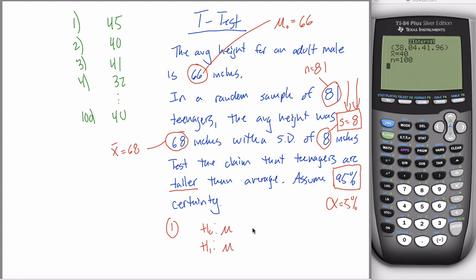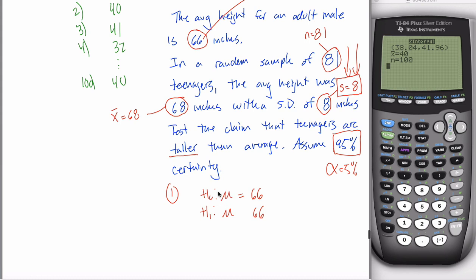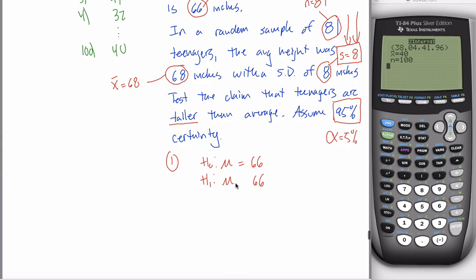You used to always compare mu and mu naught. Mu was just the symbol. Mu naught was a number given to you in the problem. The null hypothesis is that the average height of the population for which your sample is representative, the average height of all teenagers, is just the same as the average height for all adult males is 66. That's the skeptical point of view. But your claim is that the average height for all teenagers is more than 66. That's what makes them taller than average. So this would be a right-tailed test.